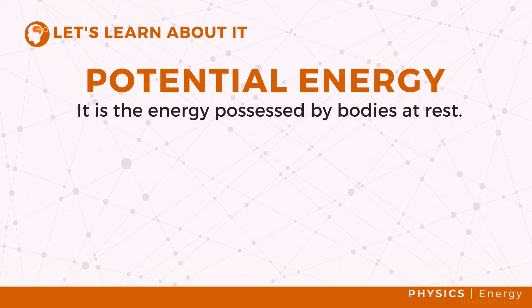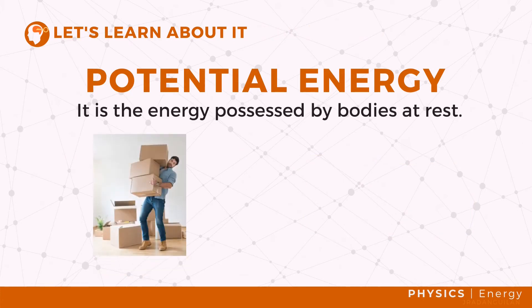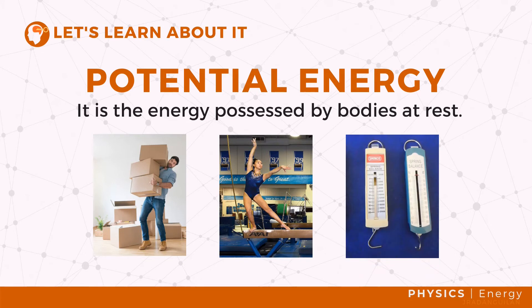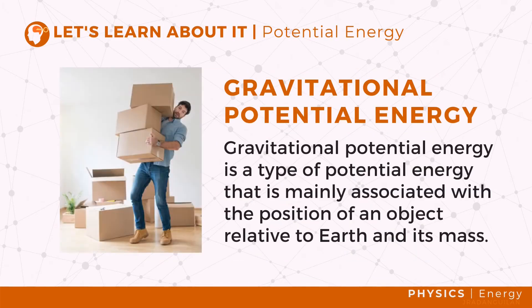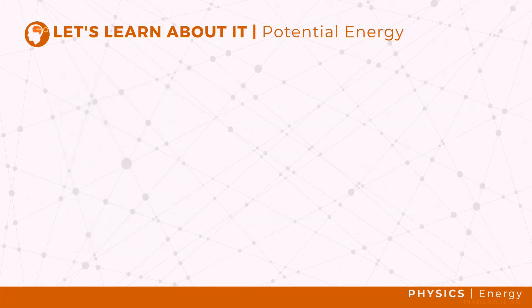Potential energy, on the other hand, is the energy possessed by bodies at rest. It is known as a stored energy having the potential to do work. When an object is raised to a certain height, energy is stored in the object — it is said to have gravitational potential energy. The object can do work by moving downwards by virtue of the acceleration due to gravity.